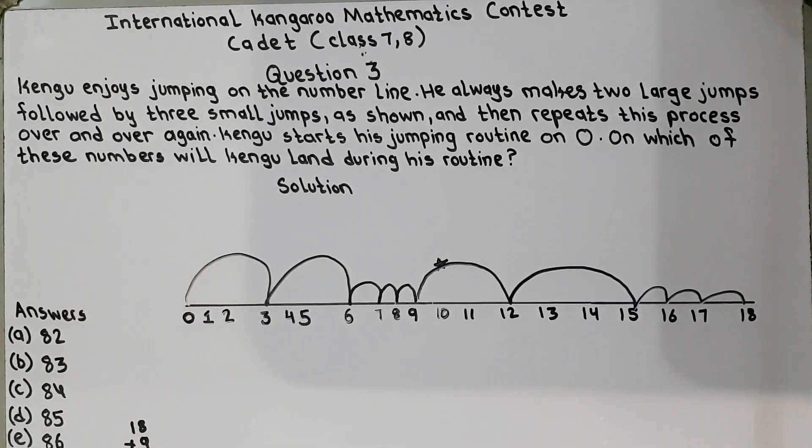27 plus 9 is equal to 27, 28, 29, 30, 31, 32, 32, 34, 35, 36. 36 plus 9 is equal to 37, 38, 39, 40, 41, 42, 43, 44, 45 and 45 plus 9 is equal to